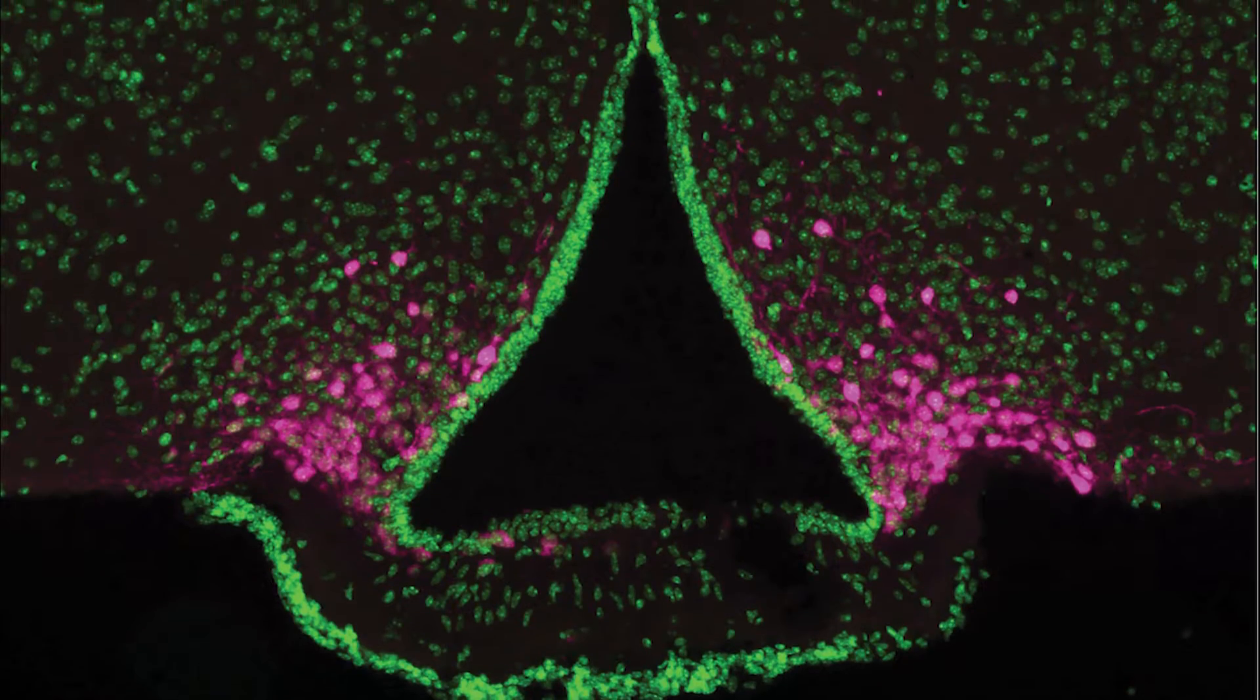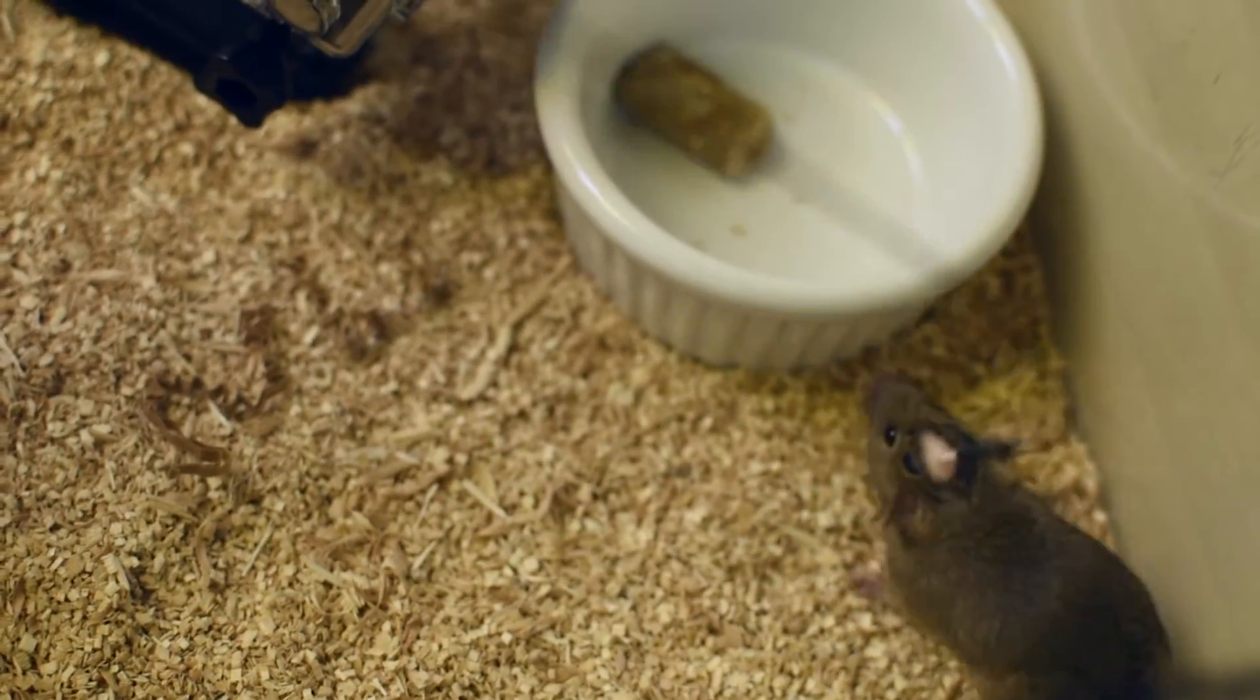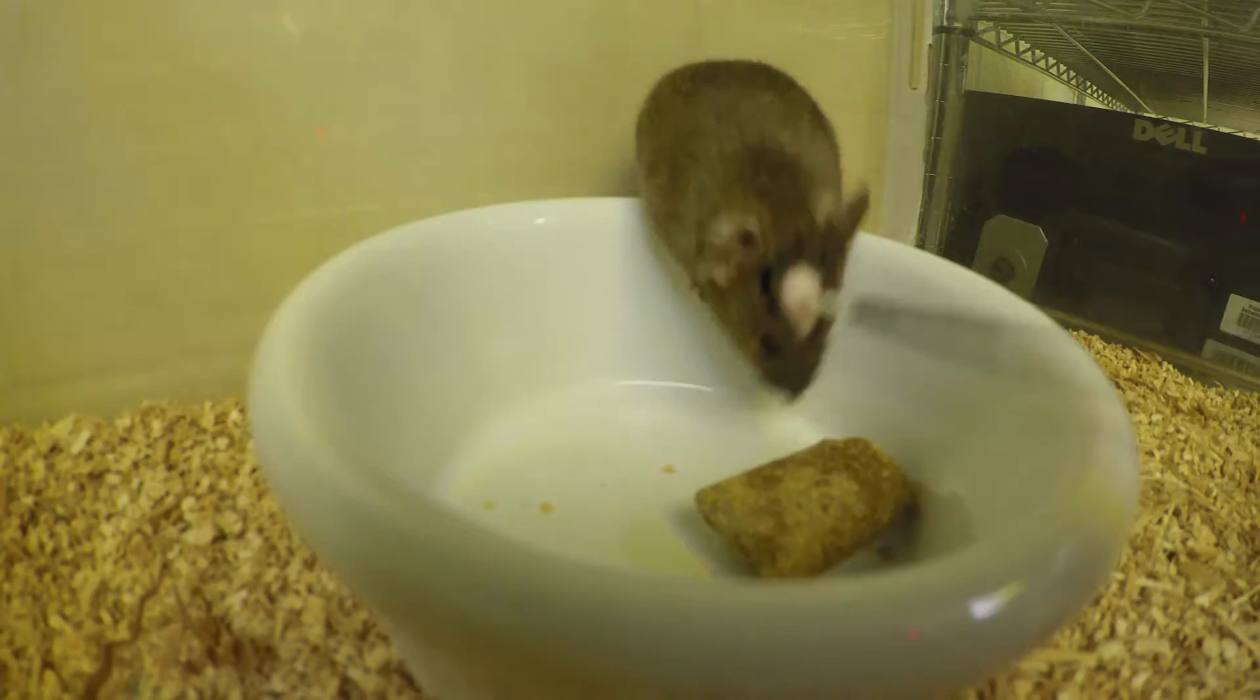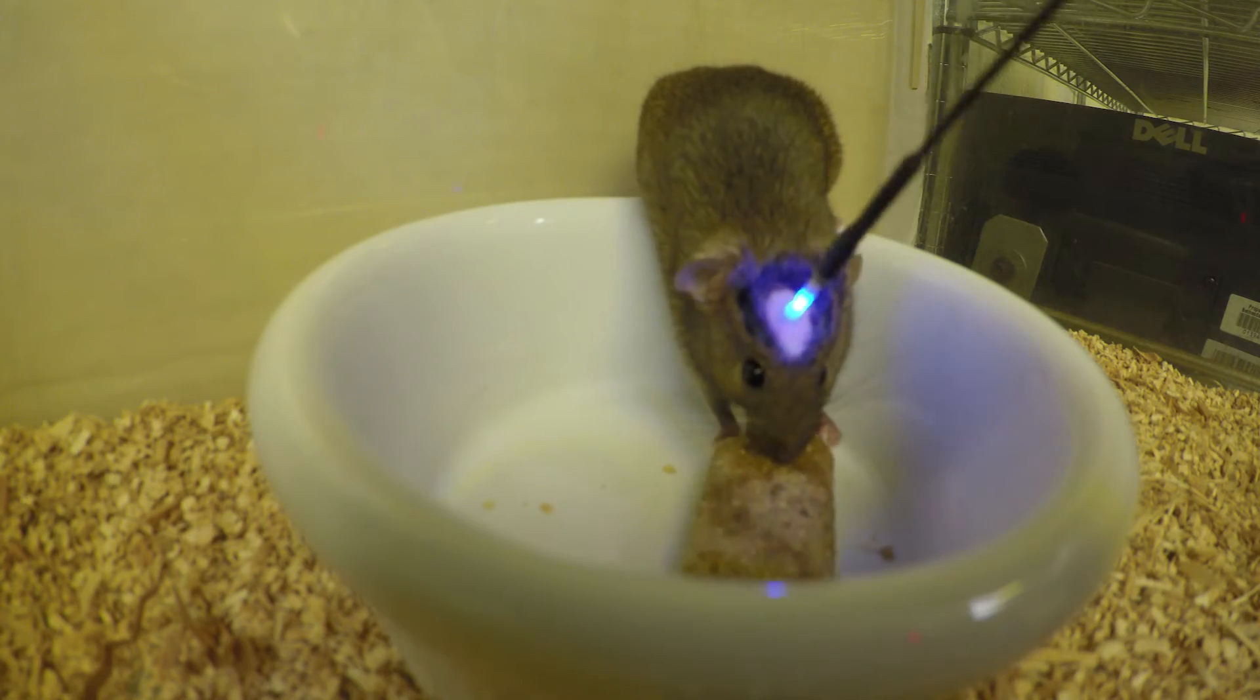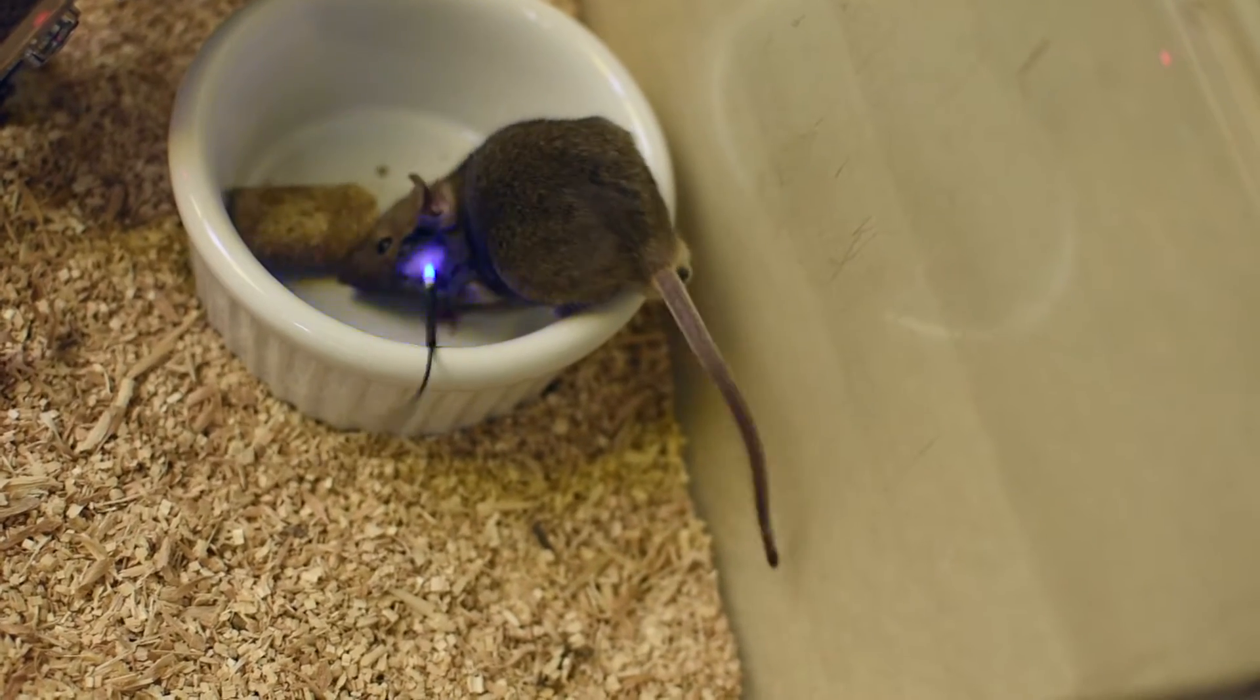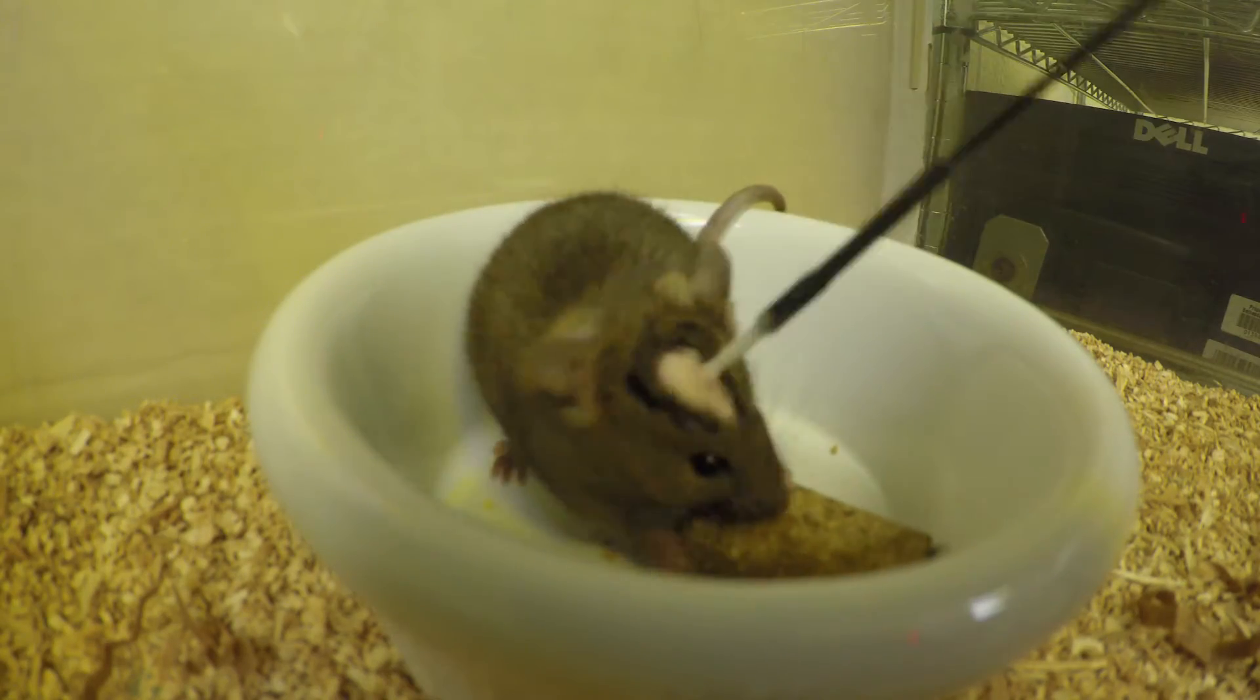We were interested in studying hunger in relation to other motivated behaviors. Agouti-related peptide neurons, located in the arcuate nucleus of the hypothalamus, have long been recognized as an instrumental component of feeding behavior. Acute activation of these neurons rapidly and robustly promotes voracious feeding.